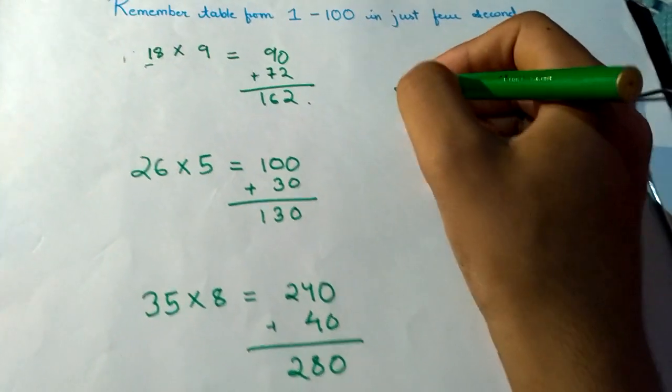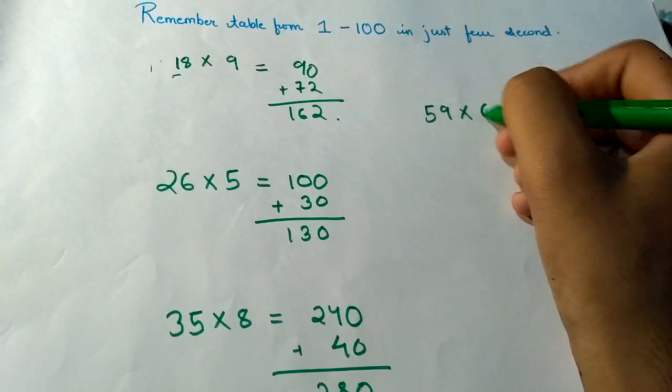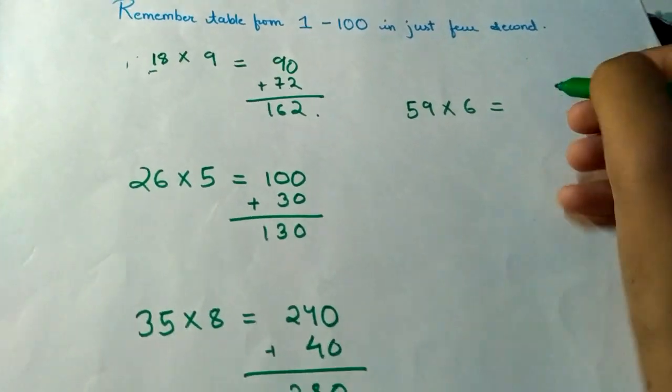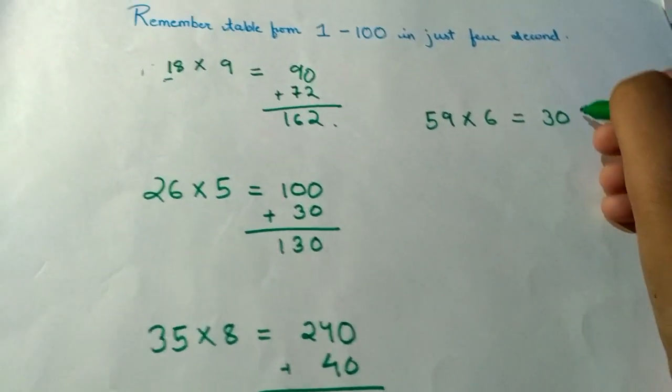Let's move to another example. I can take here 59 × 6. That is 5 × 6 = 30, and I will add another zero here, that is 300.